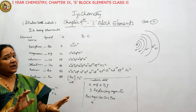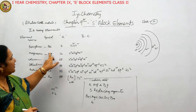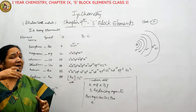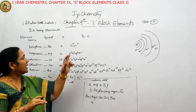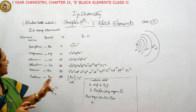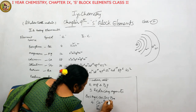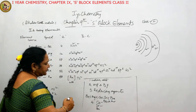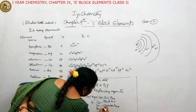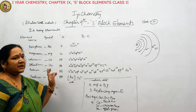The remaining elements exhibit colors in the flame test. Calcium gives brick red color, strontium gives crimson red color, and barium gives apple green color. So these are the colors shown by the second group elements in the flame test.